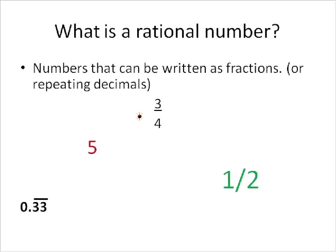For example, 3 over 4 would be a rational number. And you could write 3 over 4 as a decimal of 0.75. 5 is a number. It can be written as a fraction 5 over 1. So therefore, it's a rational number. 1 half is another fraction. This is 0.33 repeated. If it's a repeating decimal, it can be written as a fraction. This one is the fraction of 1 over 3. As long as it's a repeating pattern.